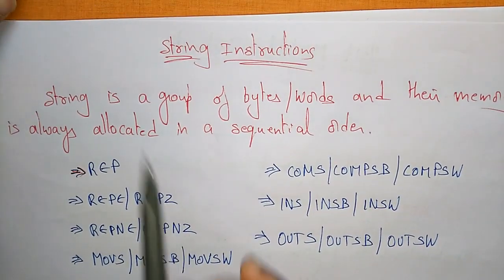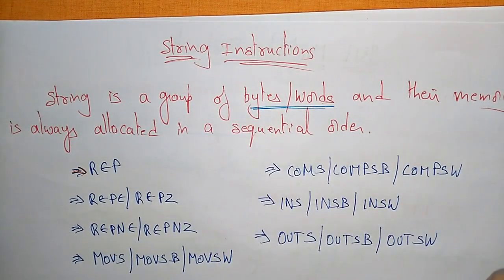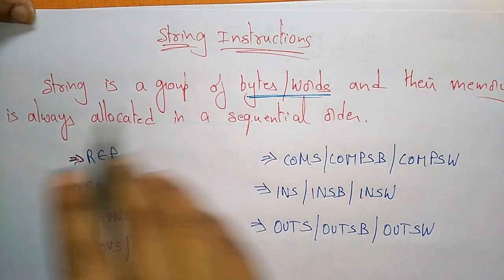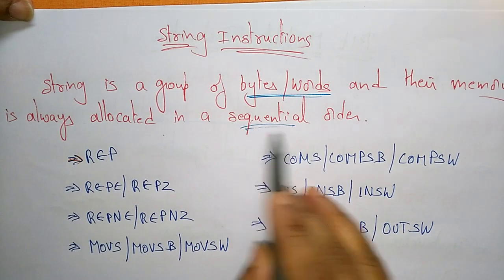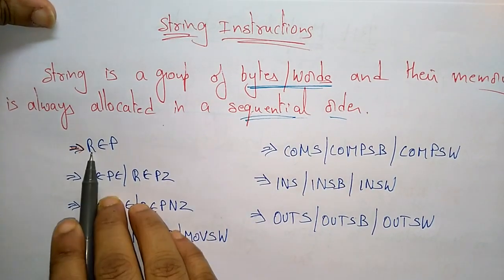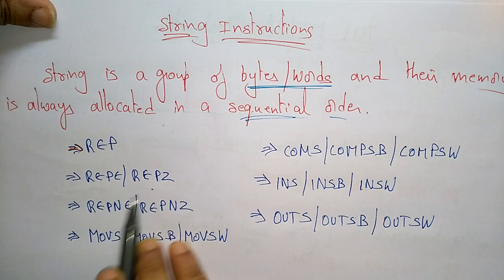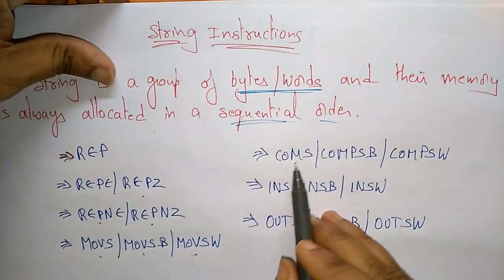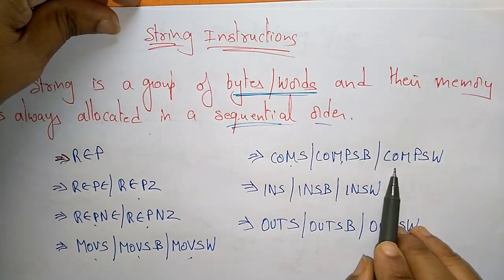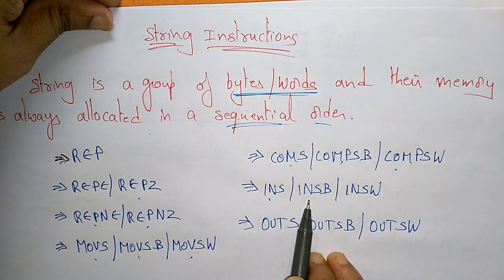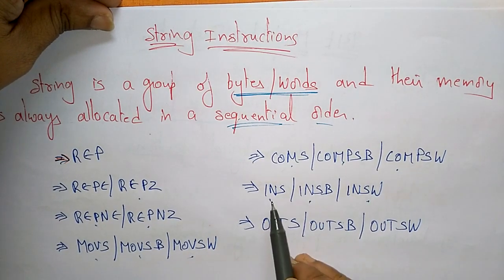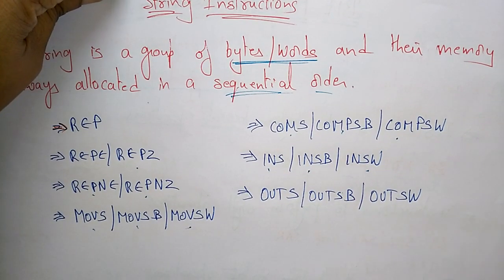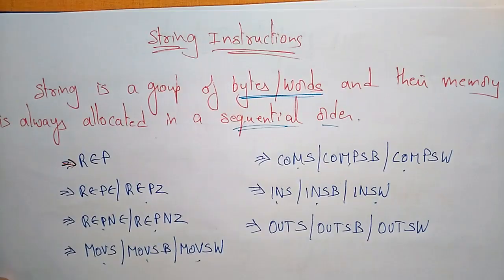The fourth type is string instructions. A string is a group of bytes or words stored sequentially in memory. The different string instructions include: REP (repeat), REPE/REPZ (repeat if equal/zero), REPNE/REPNZ (repeat if not equal/not zero), MOVS/MOVSB/MOVSW (move string/byte/word), CMPS/CMPSB/CMPSW (compare string/byte/word), LODS/LODSB (input string/byte), STOS/STOSB/STOSW (output string/byte/word).